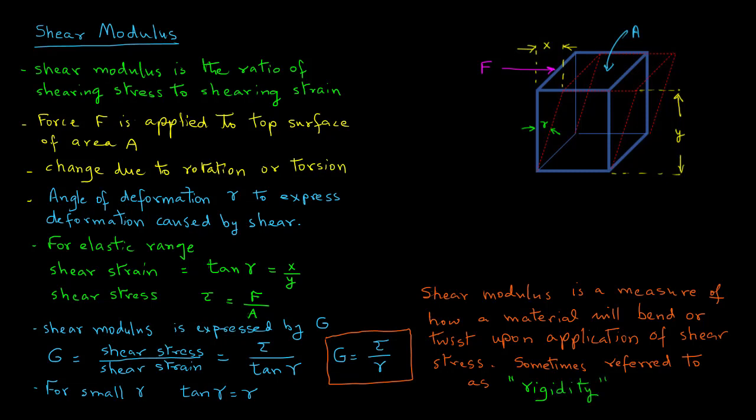So in summary, we note that shear modulus is obtained by shear stress and shear strain, and that is due to the application of the tangential force acting on the top surface that causes that shear strain as expressed by tangent gamma, and that allows us to obtain the value of shear modulus.